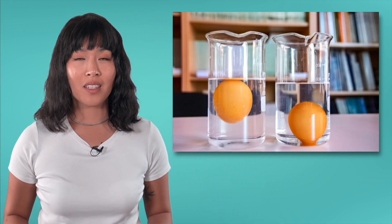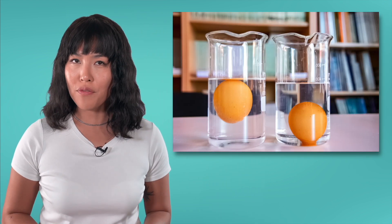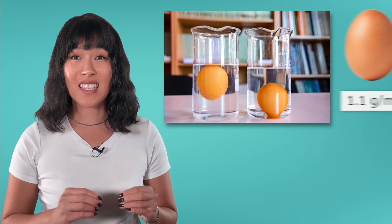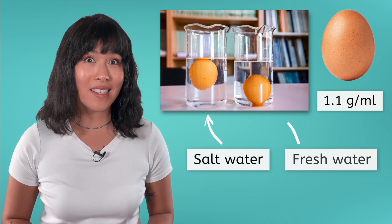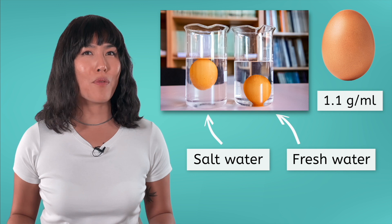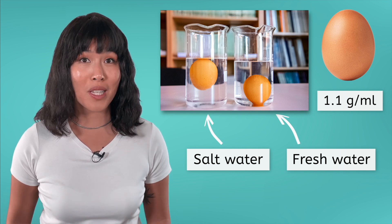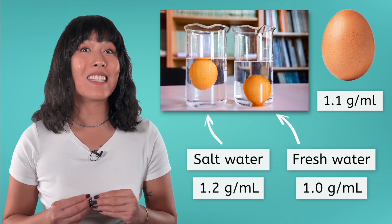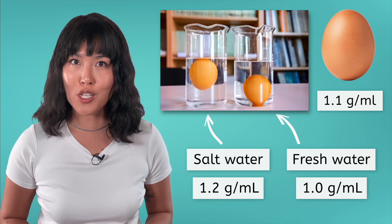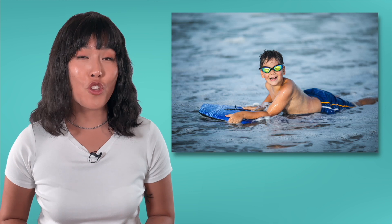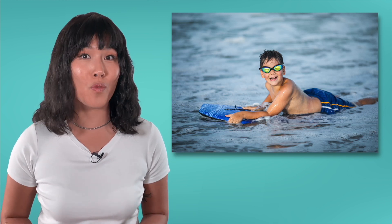But did you know that it's not just the density of the object that matters? The density of the fluid matters too. Look at this example — why does the egg float in one fluid but not the other? Both eggs have the same density, but the beaker on the left is filled with salt water, while the beaker on the right is filled with fresh water. Salt water has a slightly higher density, which means that the egg is less dense than salt water but more dense than fresh water. If you've ever gone swimming in the ocean, you may have noticed that it's easier to float in ocean water than in pool water for this same reason.